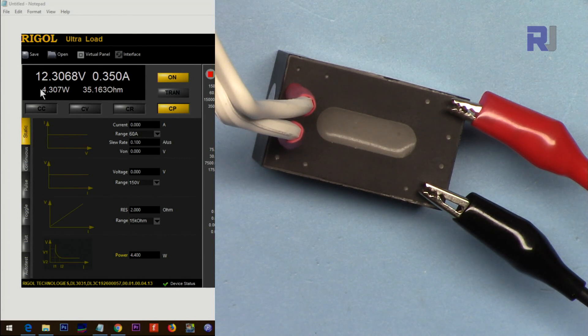Now 4.4 watts, 4.5 at 0.366 ampere. As soon as I turn it to 4.6 it doesn't work. Let me reduce it to 4.5. Once the protection kicks in you have to turn it off and turn it on again. Now it's at 4.5 watts, 0.366 ampere.